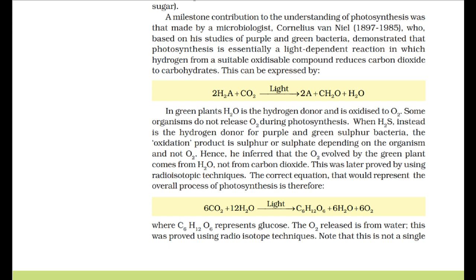Some organisms do not release O2 during photosynthesis. When H2S is the hydrogen donor for purple and green sulfur bacteria, the oxidation product is sulfur or sulfate, not O2. Van Niel inferred that the O2 evolved by green plants comes from H2O, not from CO2. The correct equation is: 6CO2 + 12H2O → C6H12O6 + 6H2O + 6O2. The O2 released is from water, proved using radioisotope techniques.